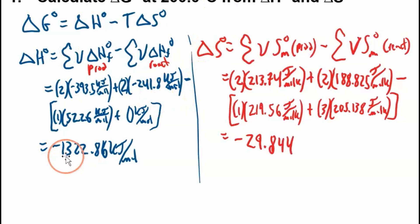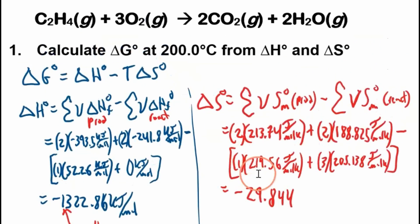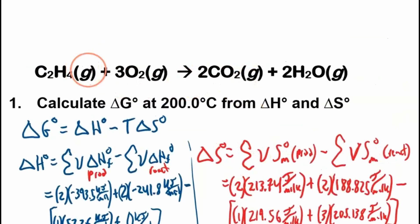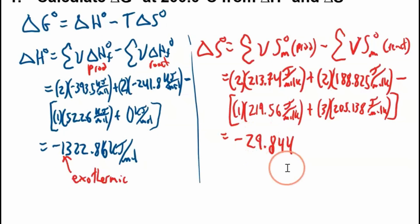2 times 213.74 plus 2 times 188.825 minus big bracket 219.56 plus 3 times 205.138. Negative 29.844 joules per mole Kelvin. So before we proceed, this change in enthalpy is negative, so this means it's exothermic. This is occurring under constant pressure and temperature. And if the entropy is negative, that means we have an increase in order, a decrease in entropy, so we have less disorder, less microstates available.